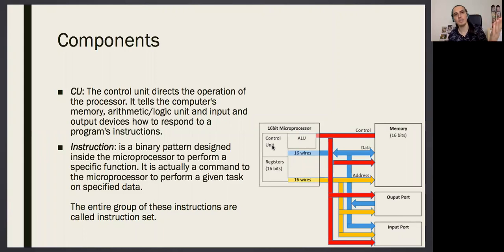So like add, like mul, it's multiply. The first three letters of mul, M-U-L, multiply. These are binary patterns designed to control the microprocessor to perform a specific function, like adding. It's actually a command to the microprocessor to perform a given task. The entire group of these instructions are called instruction set. An instruction set is actually the assembly language itself. We are going to learn the instruction set to speak the assembly language so that we can control the microprocessor.